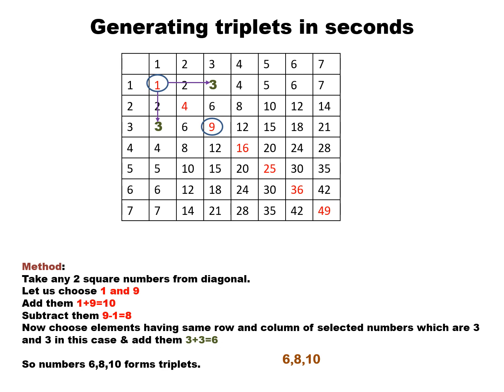Now what you have to do: firstly, you will see the diagonal which I have marked in red, and these are actually the square numbers.